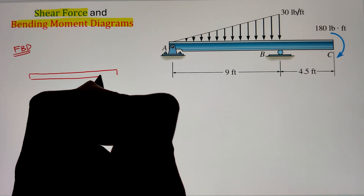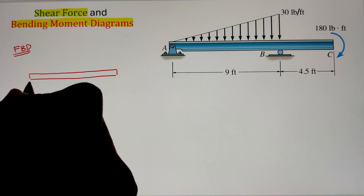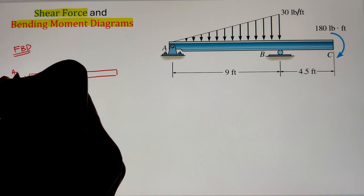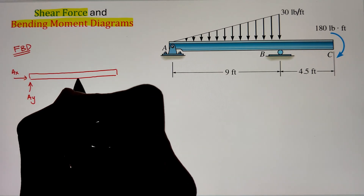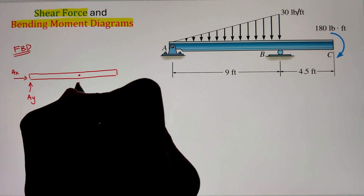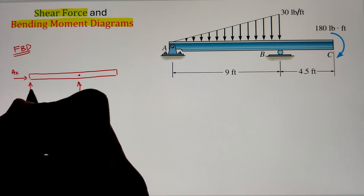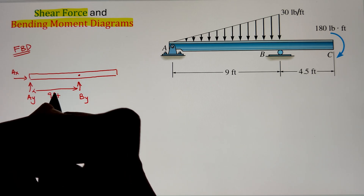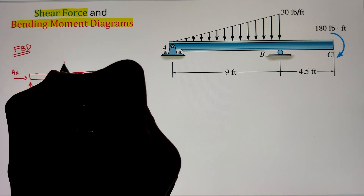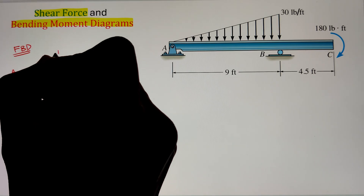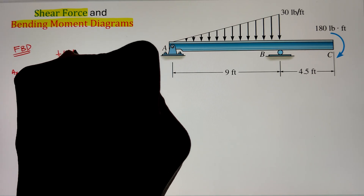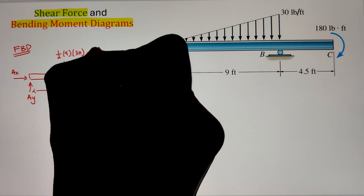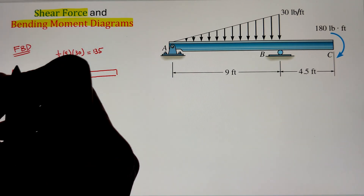Here we have a pin support at point A that will have two support reactions: one going vertically upward as AY, and the other one will be the horizontal given as AX. I have a roller at point B that has only one support reaction in the vertical direction given as BY. We also have a triangular distributive loading, and converting that into a point load, we calculate the area of the triangle as half times base times altitude, which equals 135 pounds.